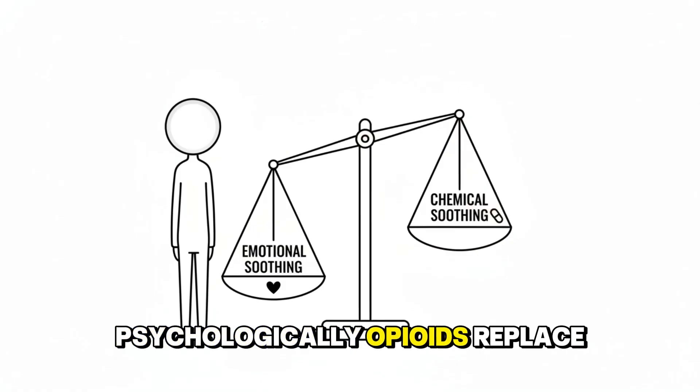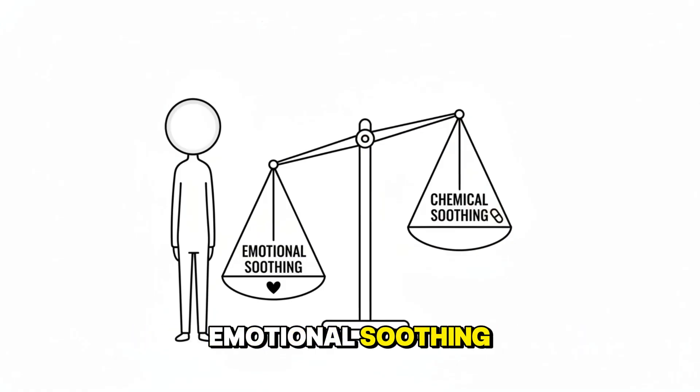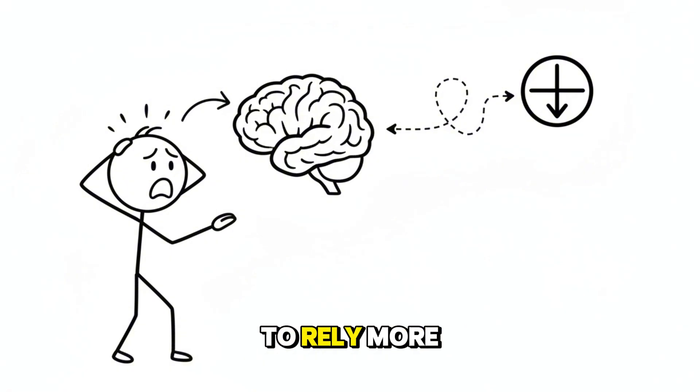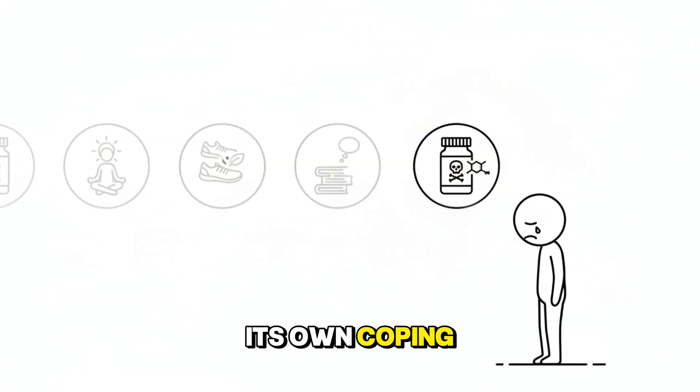Psychologically, opioids replace emotional soothing with chemical soothing. This makes natural comfort feel unreachable, pushing the brain to rely more on the substance and less on its own coping systems.